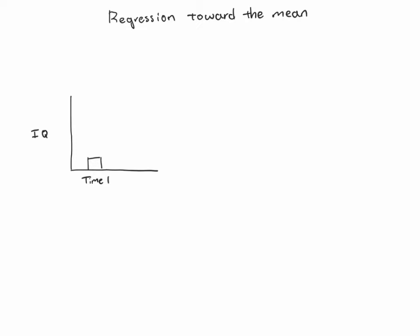We found these people have very low scores. We then give them some kind of training, and then we measure them again at time two after the training. And just like we were hoping, we find that their IQ scores are substantially higher. Of course we would like to make a conclusion like: this training caused that result. The question is, are we justified in doing that? Do we have the internal validity to make a valid conclusion about cause and effect? Or are there alternative explanations other than our training that could have caused that difference? Regression toward the mean is one of those alternative explanations we need to consider.